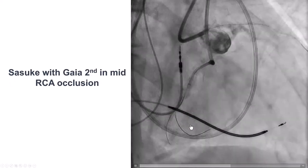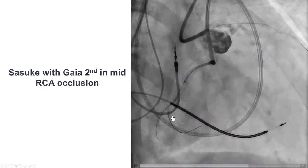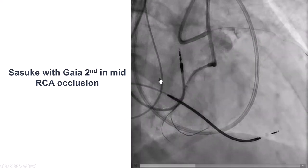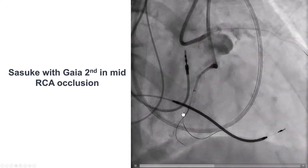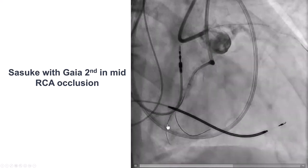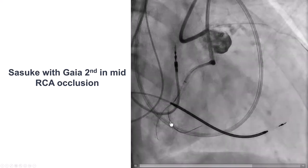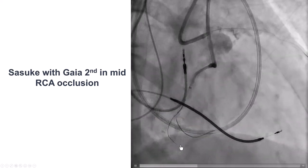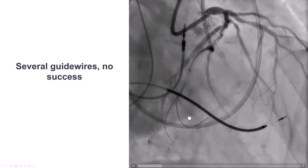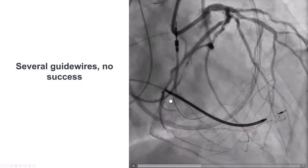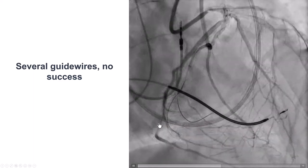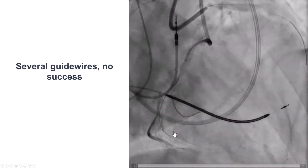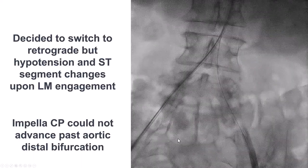So now we have a side branch next to that cap. We used a Sasuke dual-lumen microcatheter and then a Gaia Second wire. Unfortunately, that wire also went into a more distal acute marginal branch. Multiple attempts to redirect the guide wire to go into the distal RCA were made, but unfortunately the wire kept entering into the acute marginal branch.